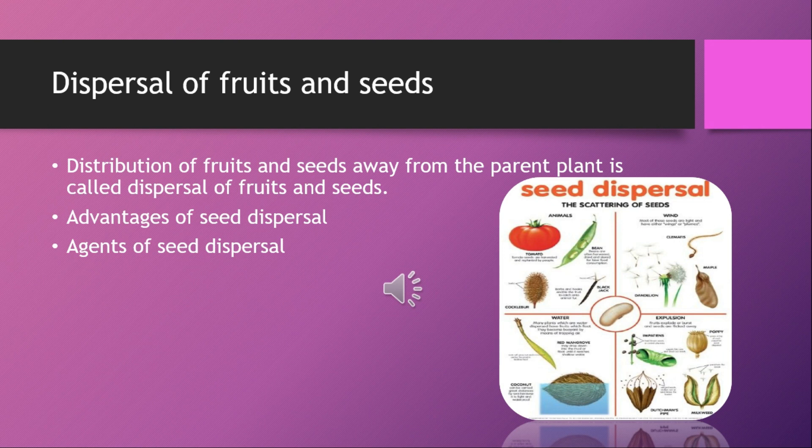There are different agents of seed dispersal: wind, water, and animals. They help in dispersal of seeds to distant places. With the help of wind, seeds are transferred from one place to another. Running water can disperse seeds to many areas. Animals also move from one place to another, carrying seeds along with them.